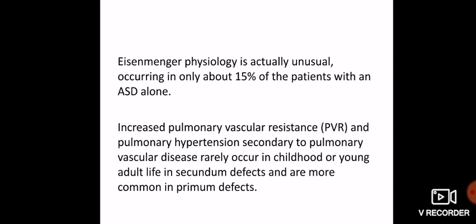What is Eisenmenger physiology? As pulmonary pressure becomes elevated due to high pulmonary blood flow or severe pulmonary hypertension, there will be reversal of blood flow from the right atrium to the left — this is called Eisenmenger physiology. This is actually unusual in ASD — seen in only about 15 percent of patients with ASD alone. Increased pulmonary vascular resistance and pulmonary hypertension secondary to pulmonary vascular disease rarely occur in childhood or younger adult life, but is more common in primum defects.